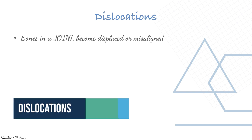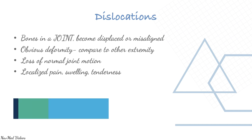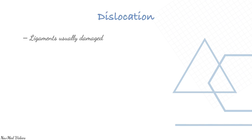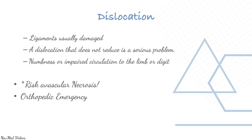A dislocation occurs when bones in a joint become displaced or misaligned, resulting in obvious deformity, loss of normal joint motion, localized pain, swelling, and tenderness. A dislocated joint sometimes spontaneously reduces before assessment — confirm the dislocation by taking a patient history. Ligaments are usually damaged. A dislocation that does not reduce is a serious problem, and numbness or impaired circulation of the limb can occur, risking avascular necrosis.